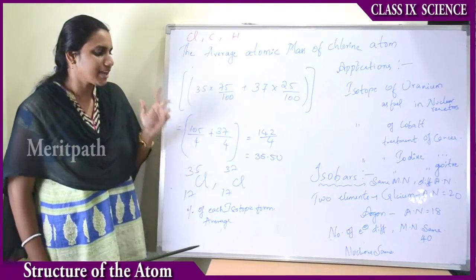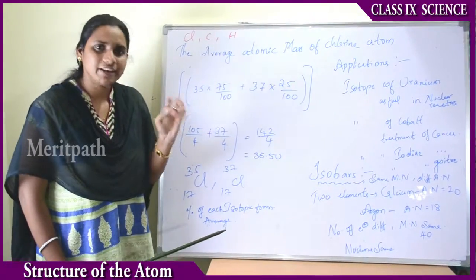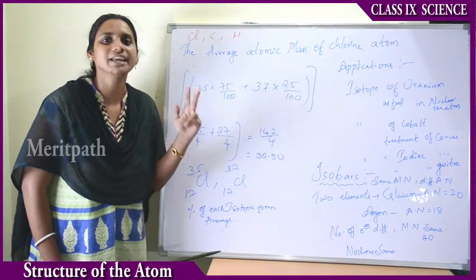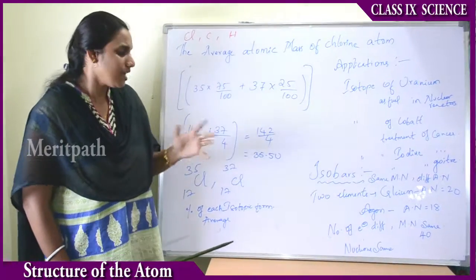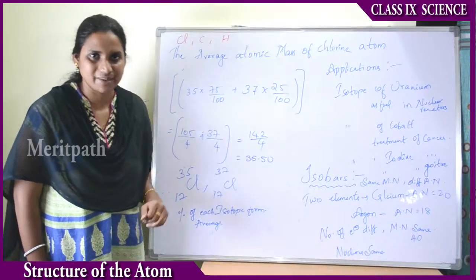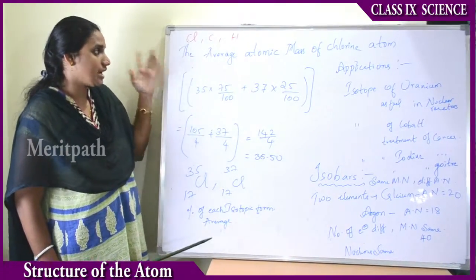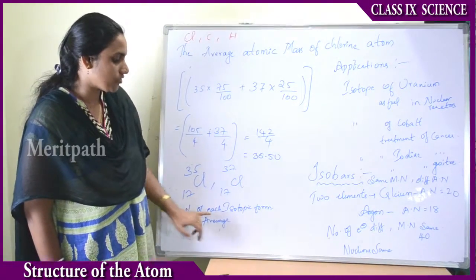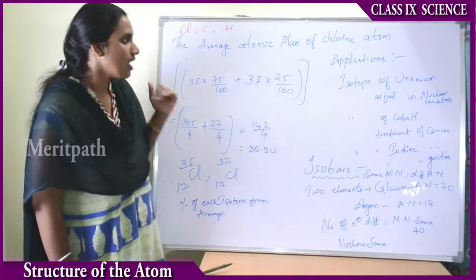This gives a fractional value, meaning that in any sample of chlorine both isotopes are present — the first and the second isotope. Therefore we get a fractional mass number for such elements. The same approach applies to hydrogen and carbon, using the percentage of each isotopic form to calculate the average mass number.